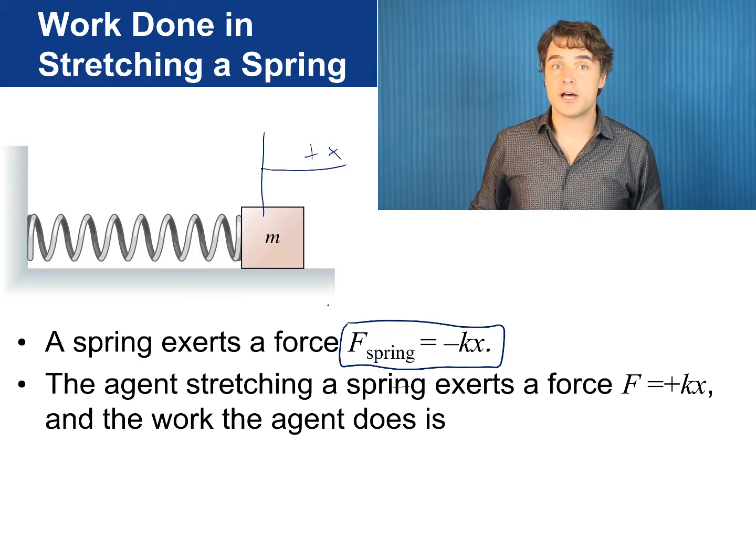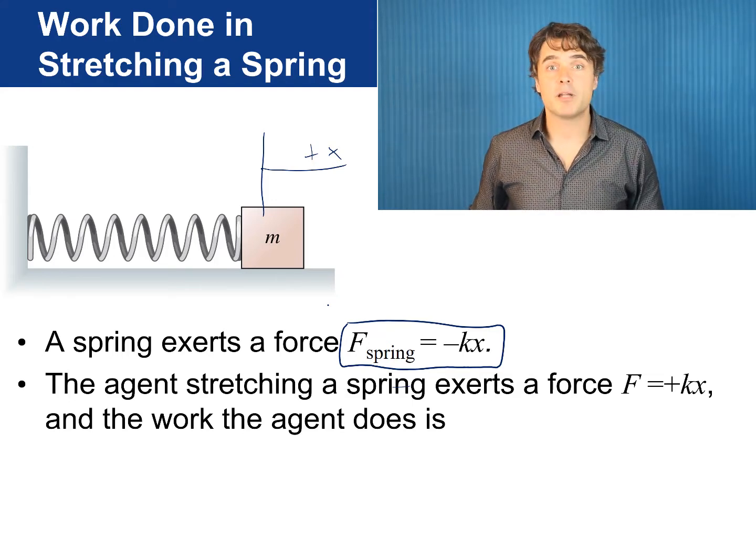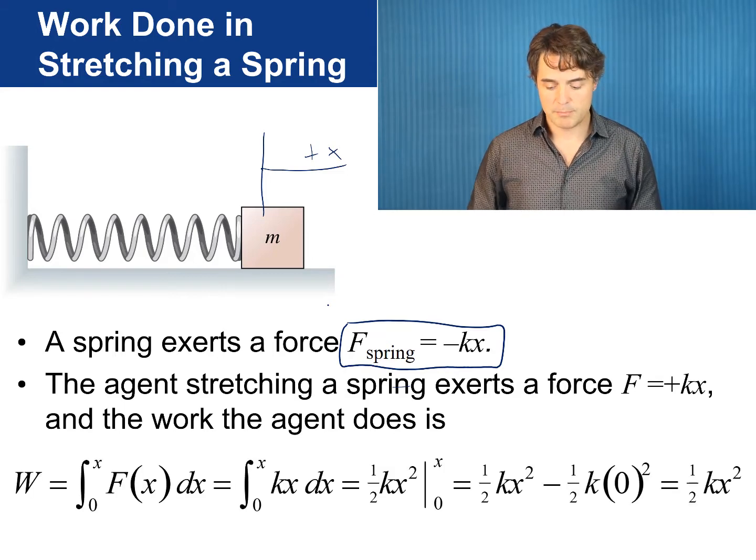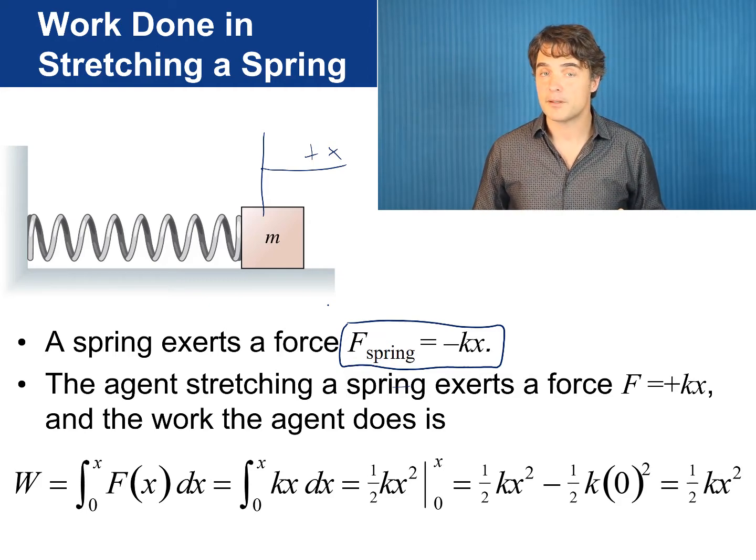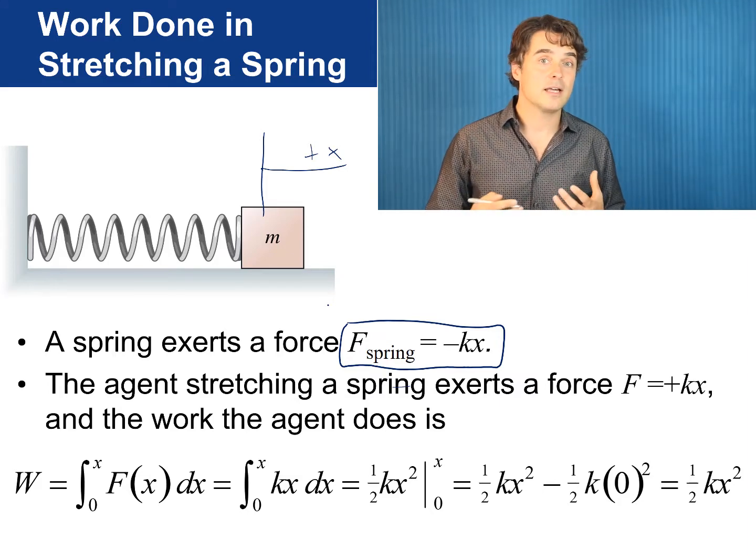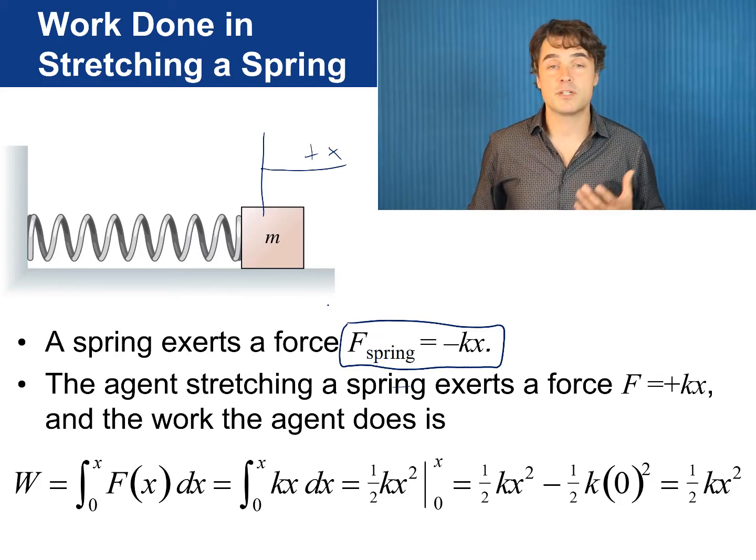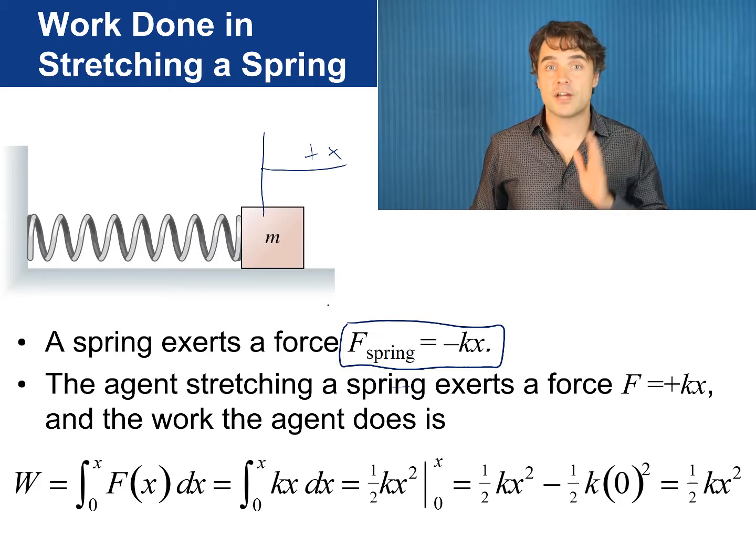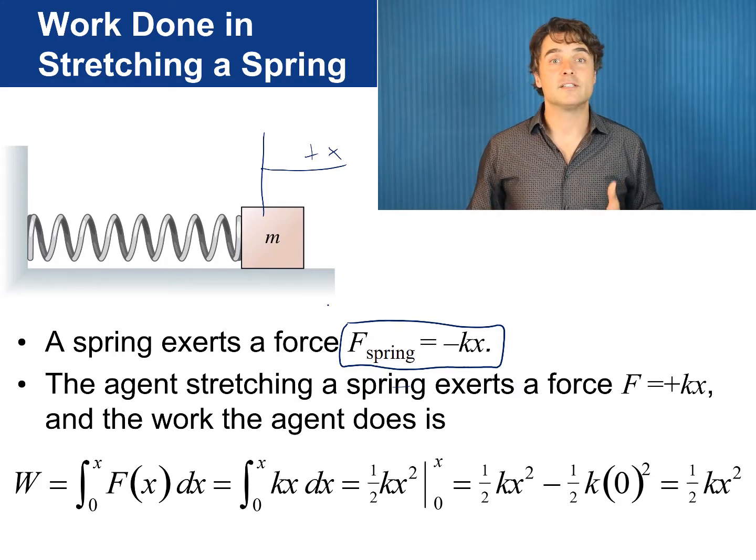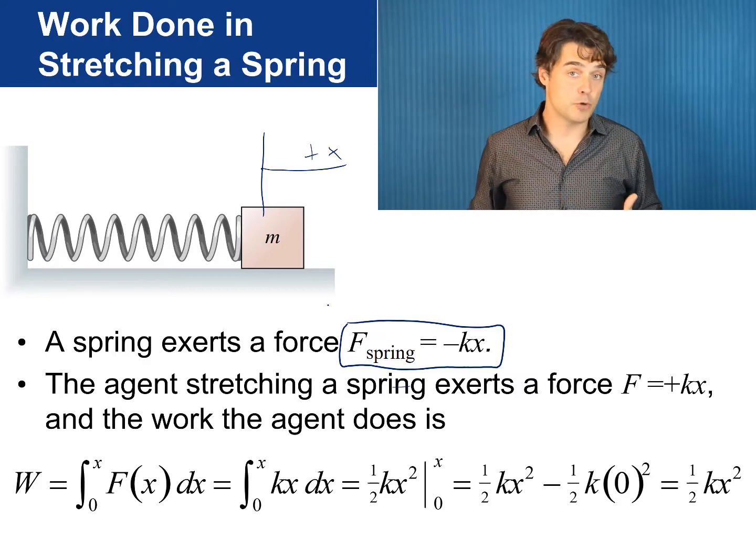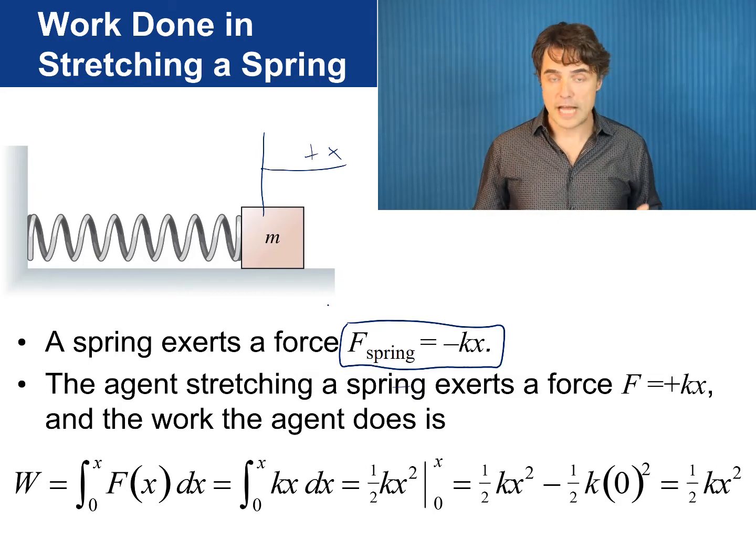F spring equals negative k times x where k is the spring constant. But if you are an outside agent trying to move the mass slowly you must balance this spring force by applying a force which is equal to plus k times x. We call this doing work against the spring. The work done by this agent as the mass travels from zero to x is the integral of f of x dx which is the integral of k times x dx. Now this is a polynomial with n equals one. The result is one-half k x squared. Subtracting the limits of x and zero you get that the work done against the spring is one-half k x squared.